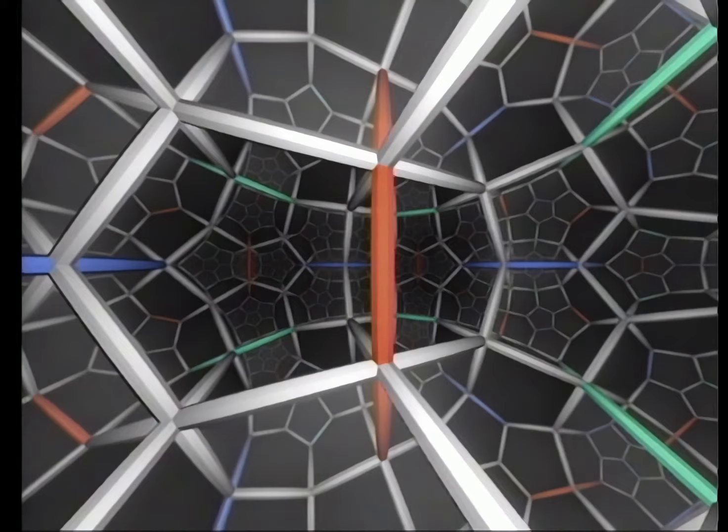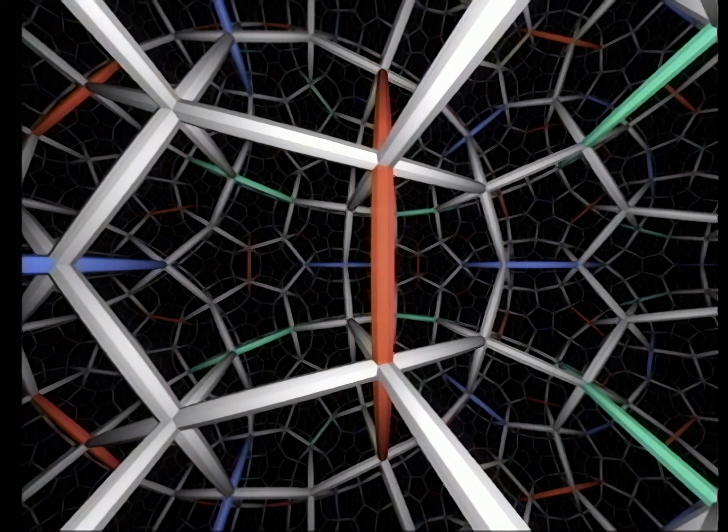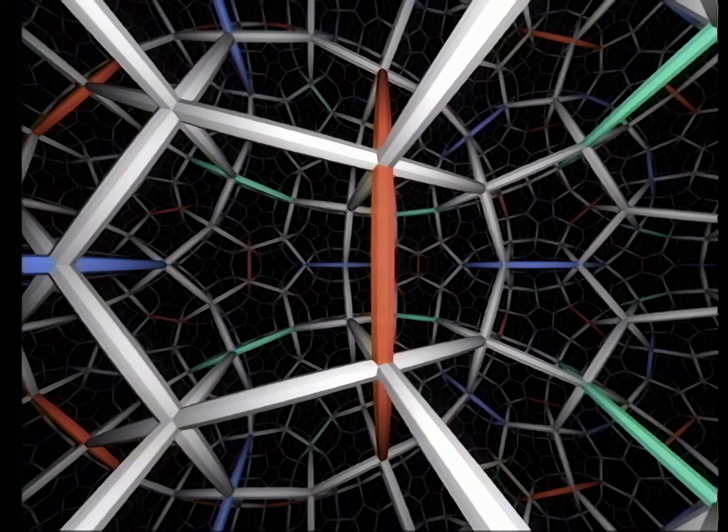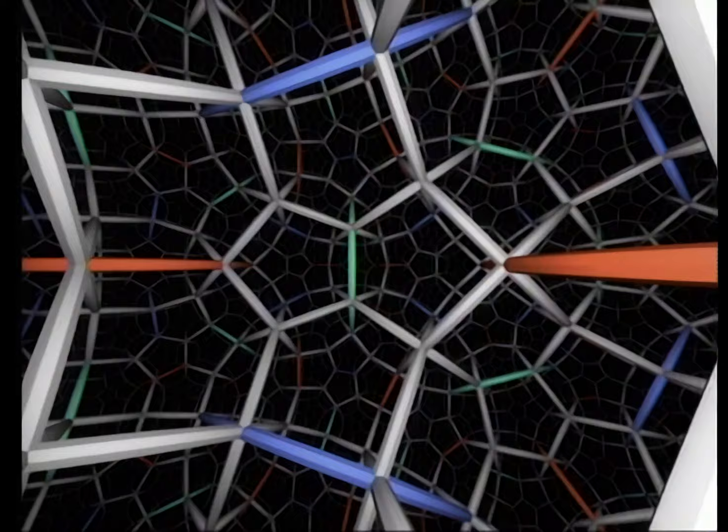Eventually the copies of the dodecahedron fill space without overlap. Just as we tiled ordinary space with cubes, we've tiled hyperbolic space with regular dodecahedra. Let's fly around a little in hyperbolic space to get a better feel for it. Notice how quickly apparent size changes as we move. This is one of the biggest qualitative differences between our everyday space and hyperbolic space.